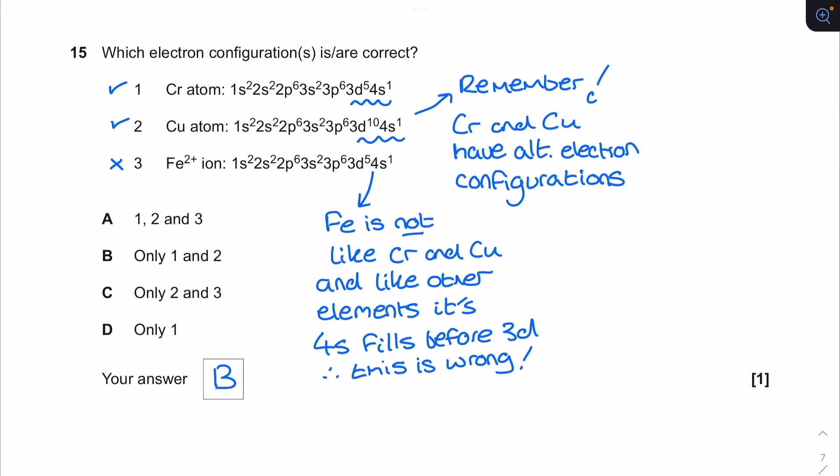For question 15 we've got some unusual electron configuration questions. Chromium and copper have got those odd electron configurations. When it gets to the regular filling of 3D after 4S, when you get to chromium and copper there's a little bit of a tweak where we end up with a half filled 4S each time and either part filling for chromium or complete filling of 3D for copper. These are the slightly unusual electron configurations for chromium and copper so they're correct. Iron doesn't do that. Iron isn't going to get this half filled treatment. It is going to be 3D6 for that iron two plus because we're going to lose all the electrons from 4S rather than one from each. So the correct answer here is one and two only which is B.